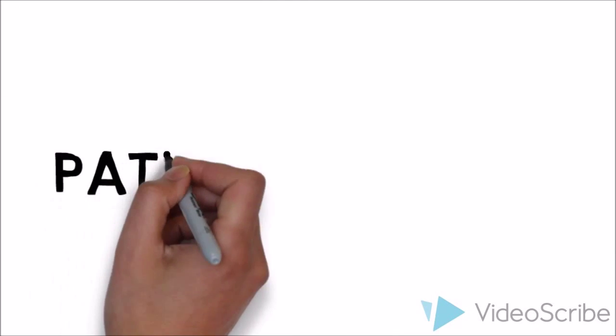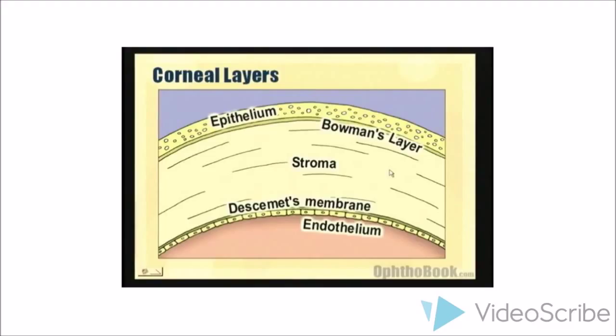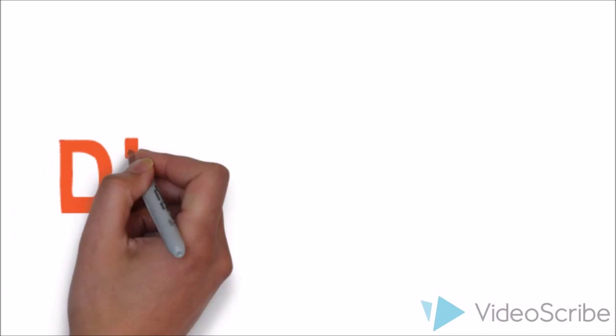Moving on to the pathophysiology, there's usually an interruption of the intact corneal epithelium which permits the entry of a microorganism into the corneal stroma where cells proliferate and cause ulceration. Neutrophils and other inflammatory cells surround the beginning ulcer and cause necrosis of the stromal lamella. The process can be very quick and that's why you need rapid diagnosis.